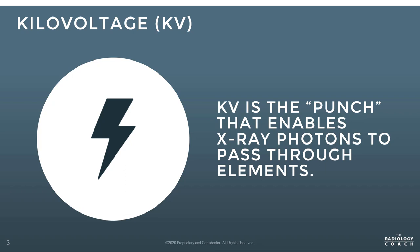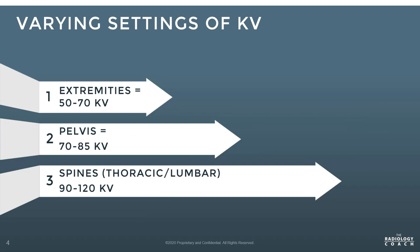KV is the punch that enables x-ray photons to pass through body elements. You need enough strength in your settings to penetrate a body part. Typically in the podiatry world, we look between 50 and 70 KV to adequately penetrate through the smaller foot and ankle elements. Your standard settings for extremities would be in that 50 to 70 KV range.